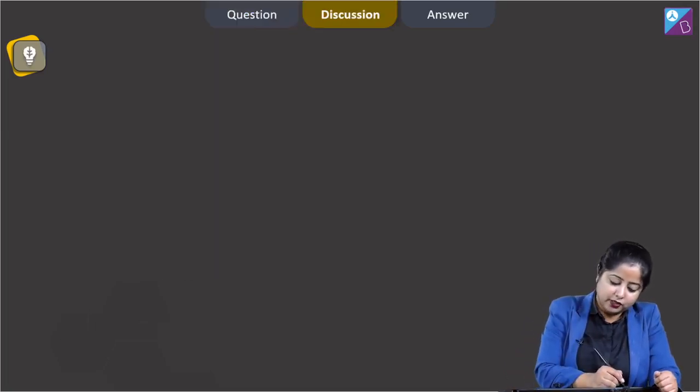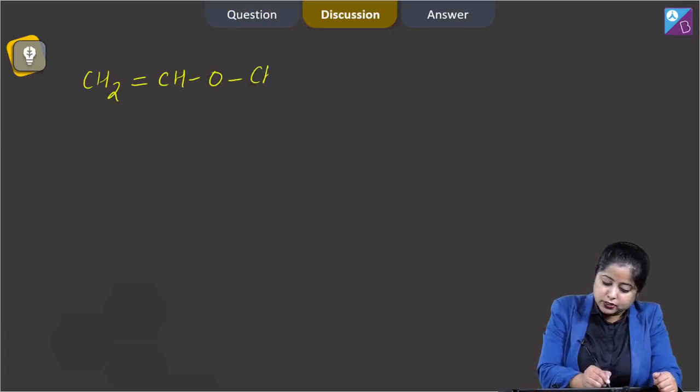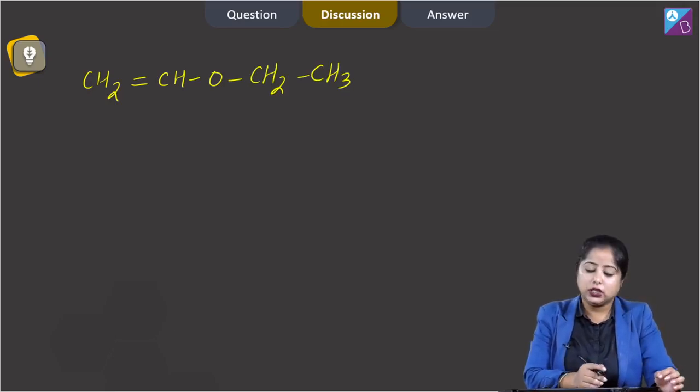Students, in this question we are given an ether which is CH2=CH-O-CH2-CH3. This is known as ethyl vinyl ether.